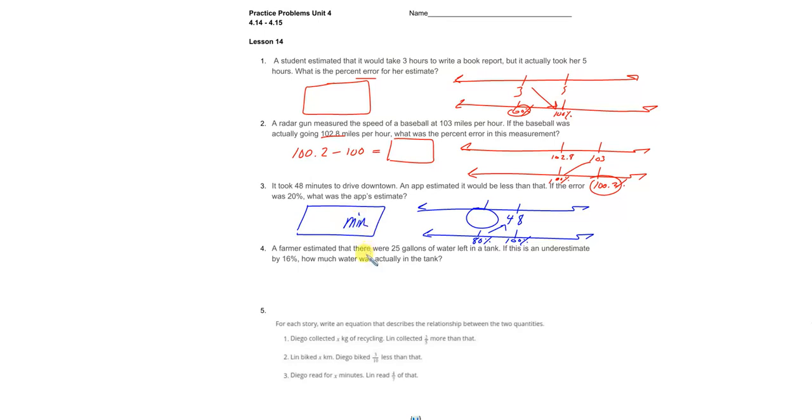Number four: Farmer estimates 25 gallons of water left in the tank. Estimations usually don't make the hundred percent number, so 100 percent is probably going to be the one thing that we don't know here. But it was an underestimate by 16 percent.